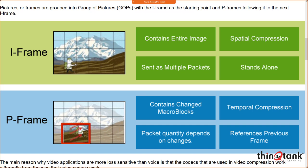Video tends to be more loss-sensitive than voice because there's more data. Video compression works differently from voice codecs. Video also tends to be more bursty depending on how much of the video is changing — more changes result in more P-frames and more information being encoded. Common video codecs include MPEG-2, MPEG-4, H.264, and H.265, each using different compression algorithms.